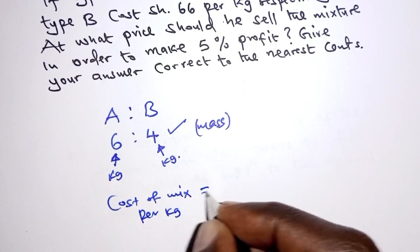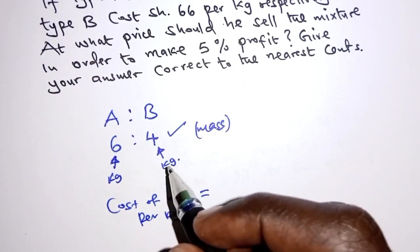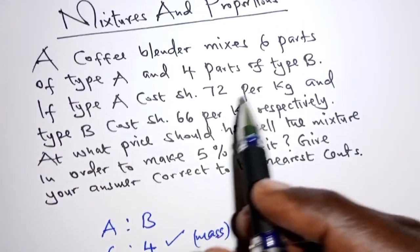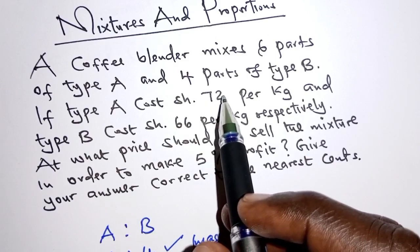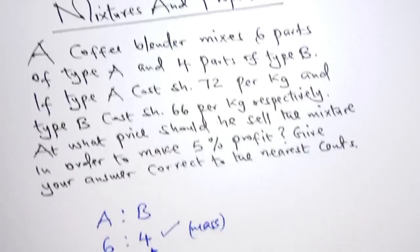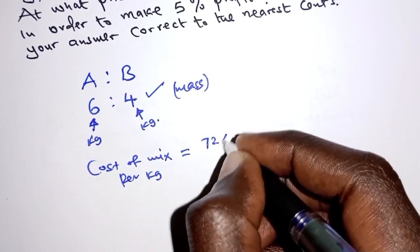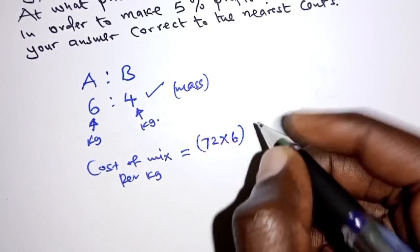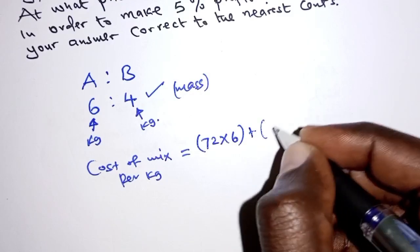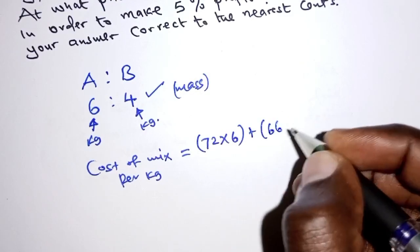The cost of mixture per kilogram will be obtained as: we take the cost per kilogram for type A, which is 72 shillings, times the total number of kilograms, so that is 72 times 6.